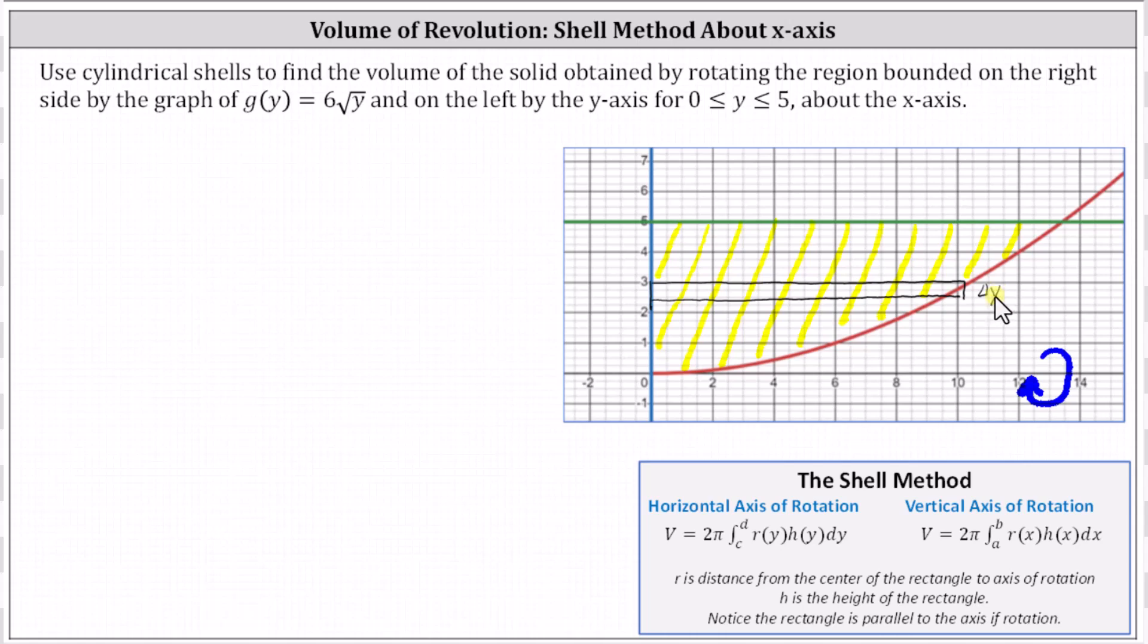Look in our notes below, because we have a horizontal axis of rotation. Again, we integrate with respect to y, and the volume equals 2π times the integral from c to d of r(y) times h(y) dy.